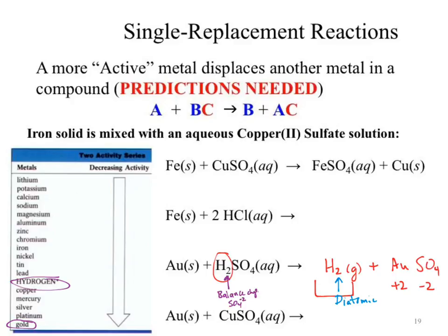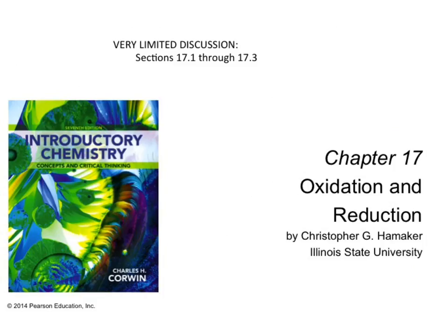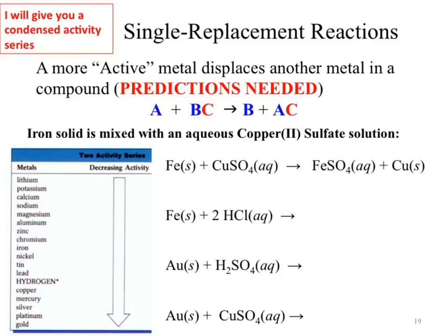On Tuesday we'll go through predicting the reaction for gold reacting with copper sulfate—that may even be a quiz question—before moving on to the next chapter. You do not need to memorize the activity series; a condensed version will be provided on the exam with only the elements you need to compare. Check the practice exam for examples.